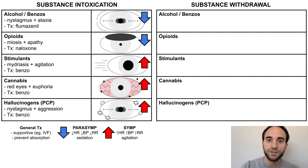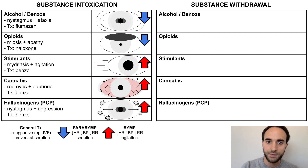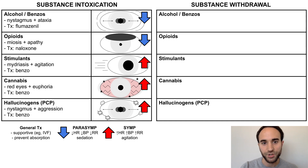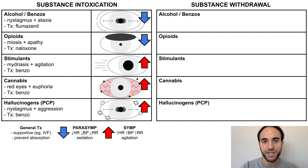The only hallucinogen tested for on a standard urine drug screen is phencyclidine, or PCP. PCP intoxication involves nystagmus and aggression, as well as sympathetic activation. Benzos can help calm aggression.